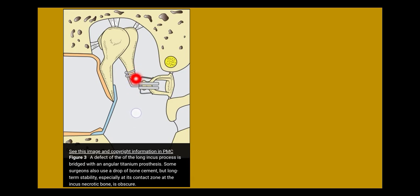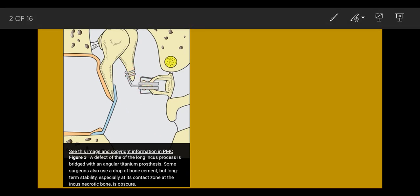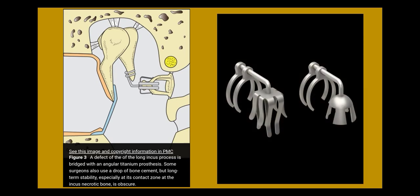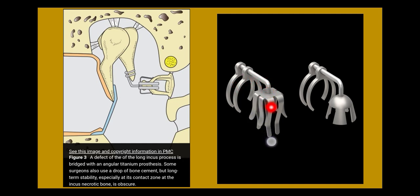When there is a defect of this nature, how do you bridge it? This is the angular titanium prosthesis to bridge the incudostapedial joint. It clips onto the incus stub and clips onto the stapedial head.